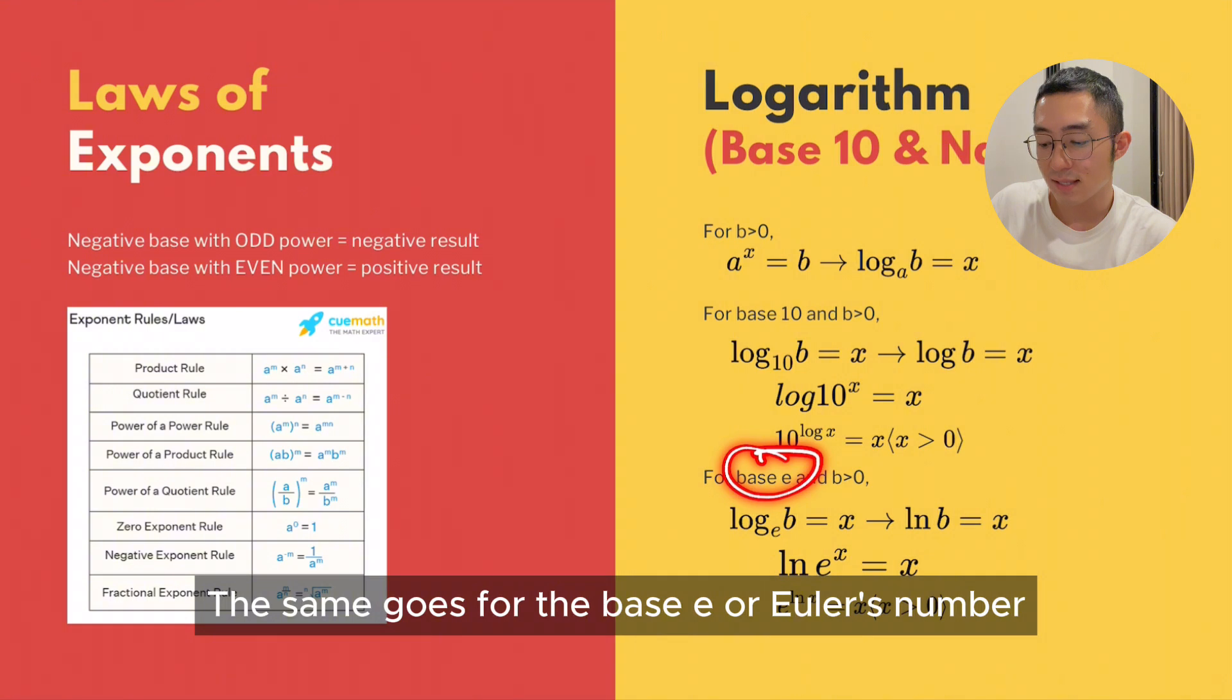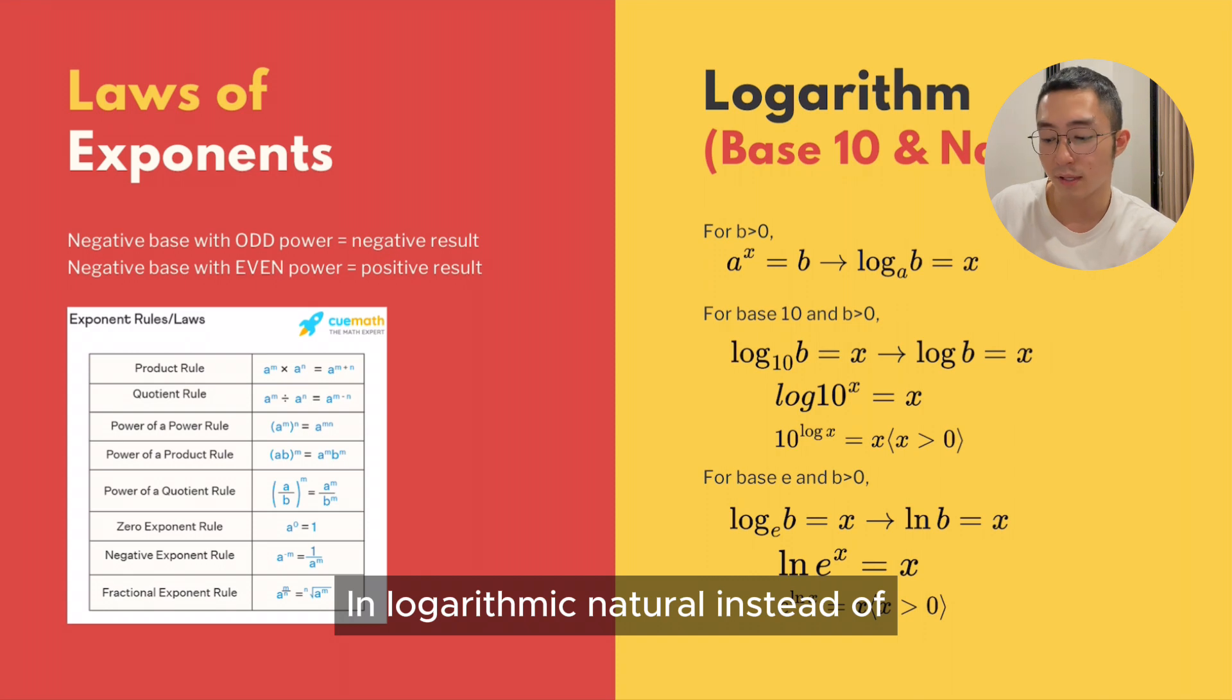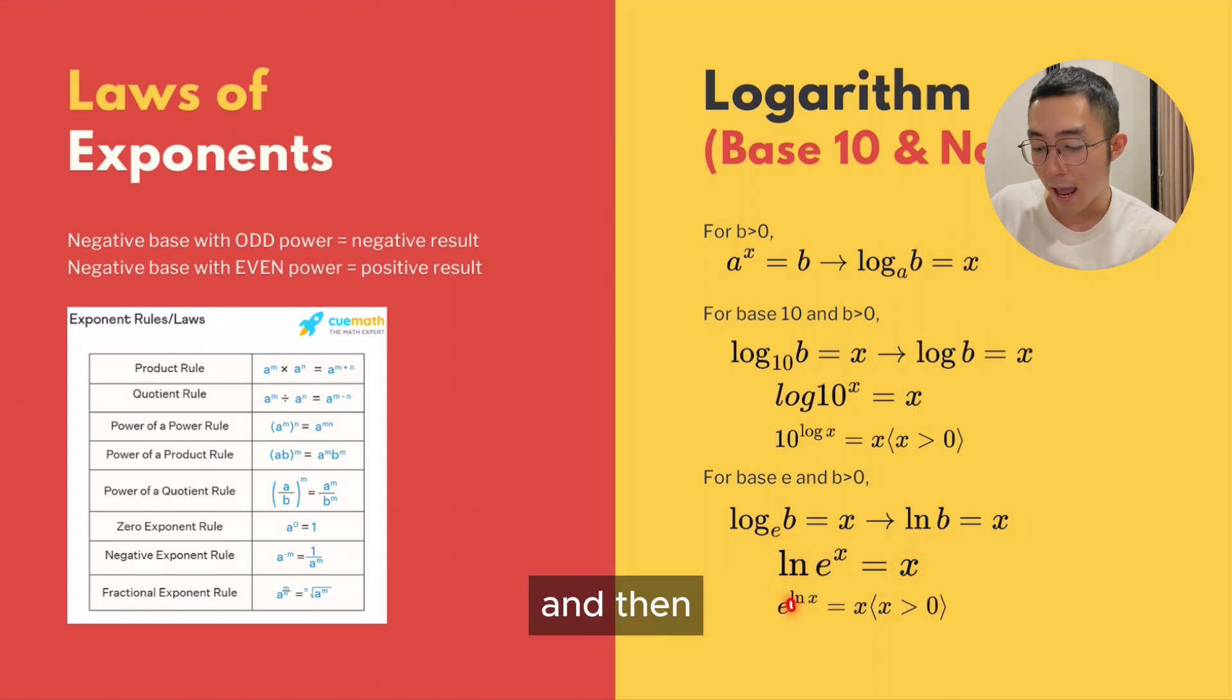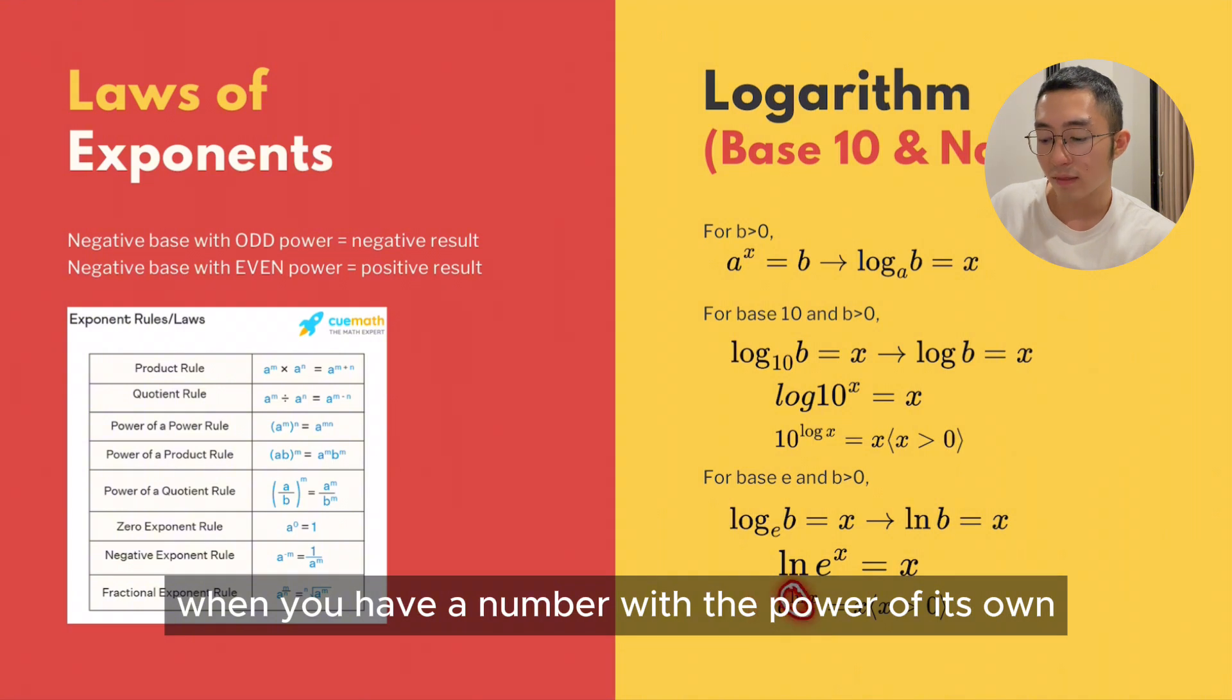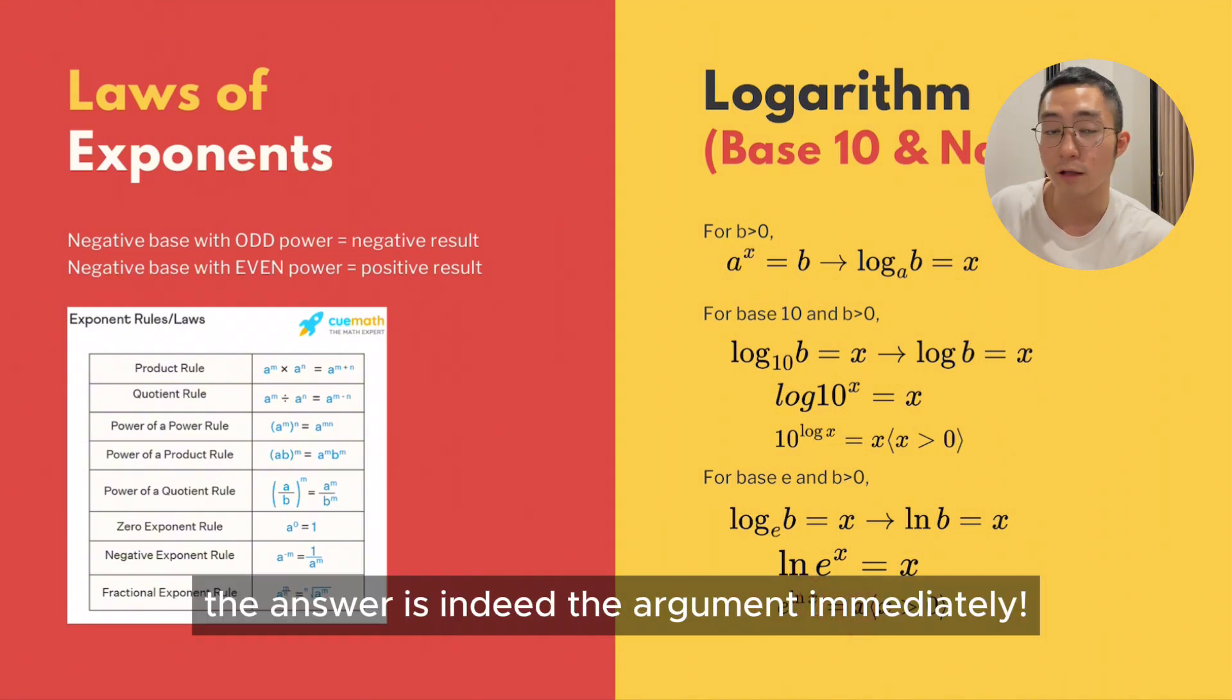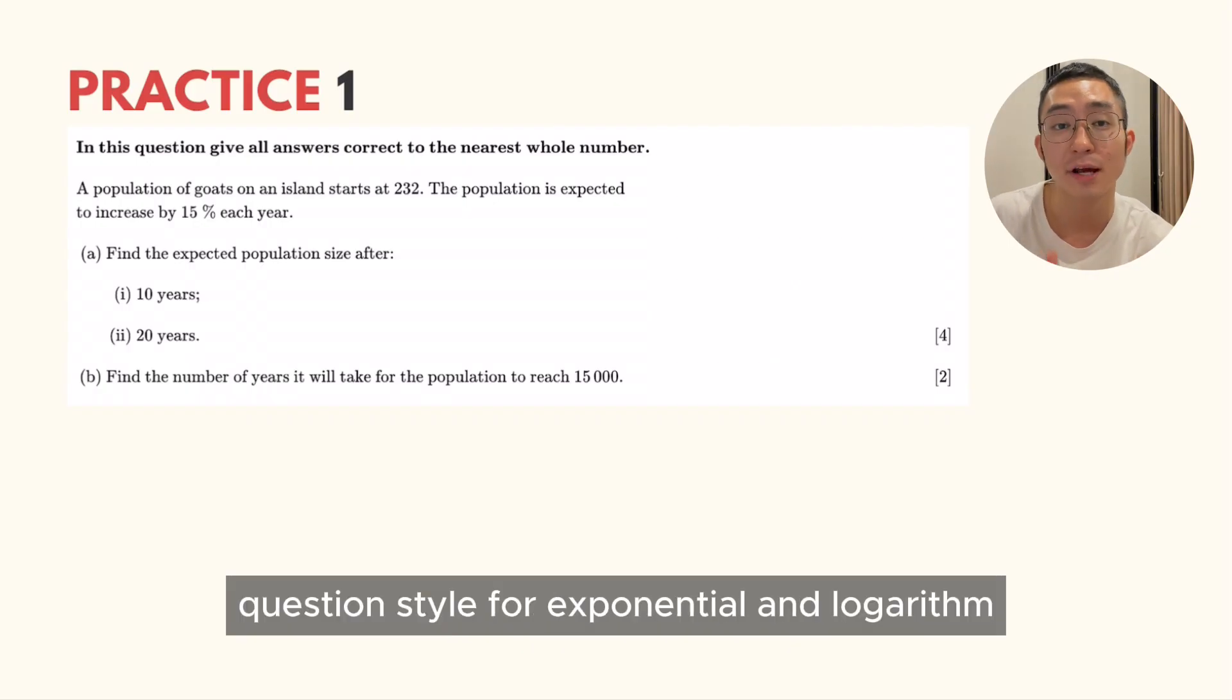Same goes for the base e or Euler's number. You can write it ln, logarithm natural, instead of log e. And then the same rule applies. This is log base e, argument e, so the answer is the power immediately. And when you have a number with the power of its own logarithm base, the answer is indeed the argument immediately.